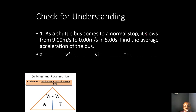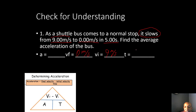The bus is slowing down, so our acceleration is going to be negative. It goes from nine meters per second — that's the initial velocity — to zero meters per second, which is the final velocity. It does this in five seconds. We need to find the average acceleration of the bus, so that's what we're solving for.